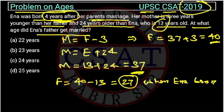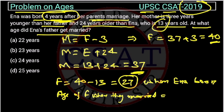But one more condition is given: Anna was born 4 years after her parents' marriage. So we deduct 4 from 27. The age of the father when they got married will be 27 minus 4, which equals 23. So the age of the father when he got married was 23 years.